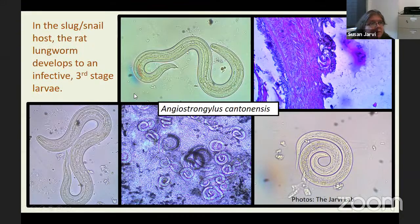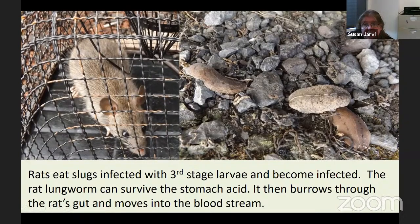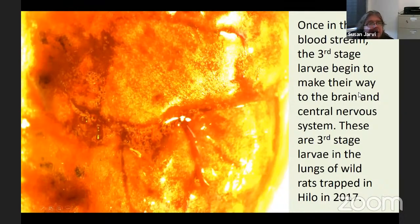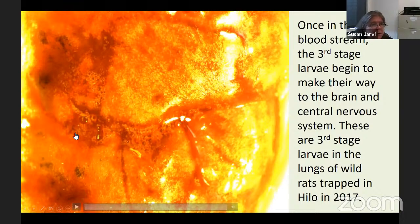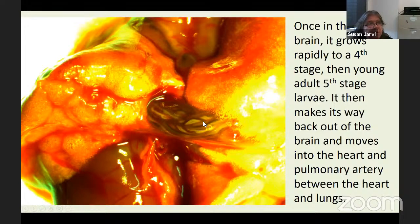The different stages develop into the infective third stage larva, which is the one we're really concerned about. Rats eat the third stage larva and become infected. These parasites can survive the acidity of the stomach, and once in the bloodstream, they travel to the brain and central nervous system. You can see the worm in this rat brain from one of our studies. In the brain, it grows to the fourth and fifth stage, then makes its way into the pulmonary artery of the heart and lungs. You can see the worms in this pulmonary artery — the females have a barber pole stripe characteristic, and these are the males.